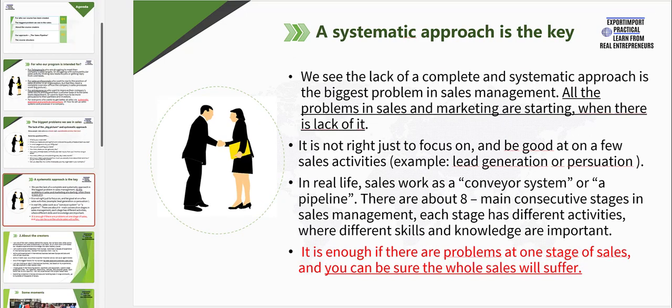So why is the systematic approach so important in sales? It is actually very simple — because all the problems in sales and marketing start when there is a lack of systematic approach. It is not right to just focus on and be really good at a few individual sales activities, for example lead generation or persuasion. Because in real life, the sales works as a conveyor system, or as a sales pipeline as we call it. And there are about eight main consecutive stages in the sales management. In each of those stages, there are different activities where different kinds of skills and knowledge are important. And it is totally enough when there is a problem in one stage of your sales, and you can be very sure that your whole sales will suffer.